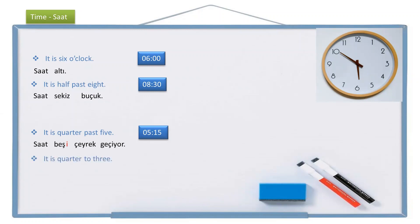Another example: it is quarter to three. This time it's not passing, so we need to use 'there is / there are' — var in Turkish. It is: saat, three — üç, with the dative suffix — üçe, quarter — çeyrek, var. It is quarter to three: saat üçe çeyrek var.